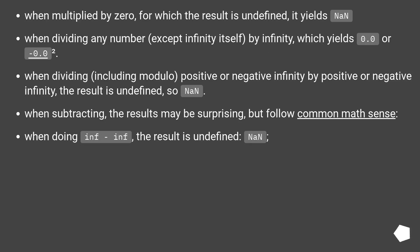When multiplied by zero, for which the result is undefined, it yields NaN. When dividing any number, except infinity itself, by infinity, which yields 0.0 or minus 0.0.